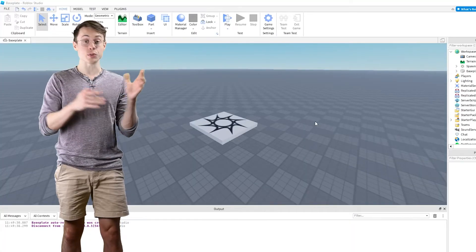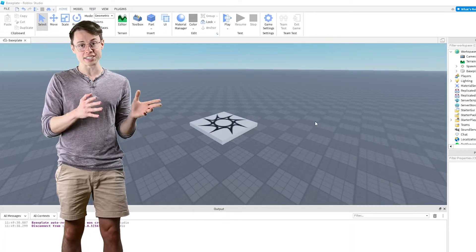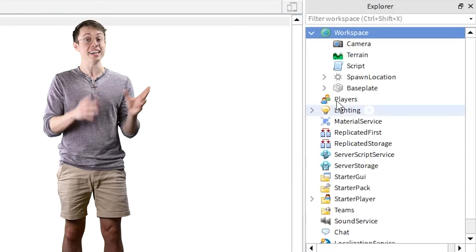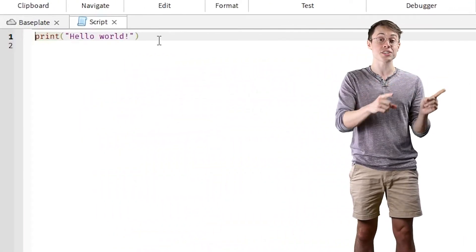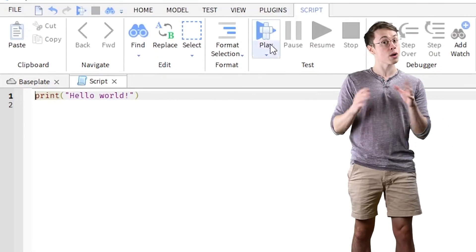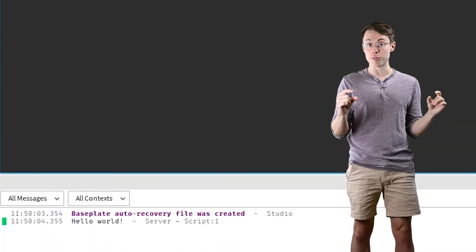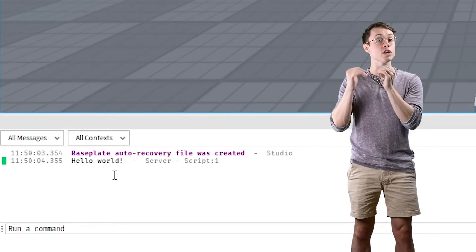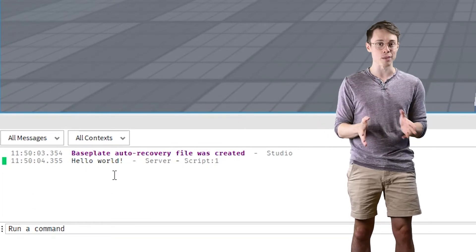Scripts are just text files where you can keep a lot of commands in the same place. If you go over to the workspace and add a script object, it should open automatically, and you'll see that the first line actually uses that same print command we used in the first video. If you run the game, you'll see that message pop up in the output window. That's because if a script is in the workspace, it immediately runs all of its commands in order as soon as the game starts.